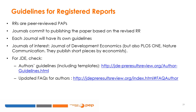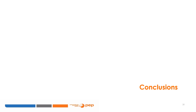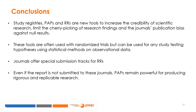Journals with an RR track include the Journal of Development Economics, PLOS One, and Nature Communication, which publishes short pieces by economists. To conclude: study registries, PAPs, and RRs are tools to increase the credibility of scientific research, limit the cherry-picking of research findings, and limit a journal's publication bias against null results. These tools are often used with randomized trials but can be used for any study testing hypotheses using statistical methods on observational data. Some journals offer special submission tracks for RRs. Even if a report is not submitted to these journals, PAPs remain powerful for producing rigorous and replicable research.